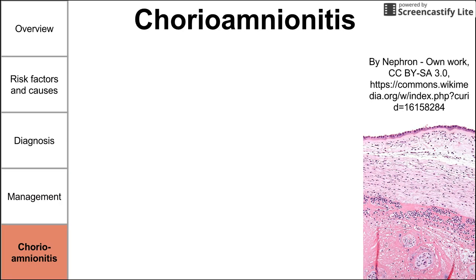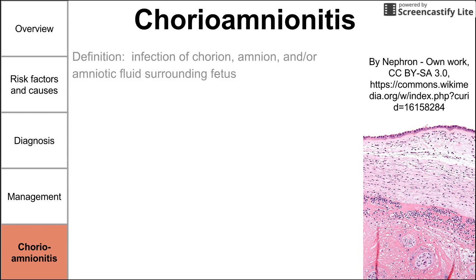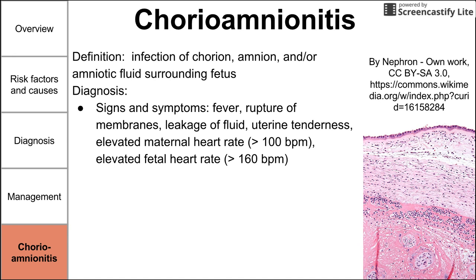One complication of premature rupture of membranes is chorioamnionitis — by definition, an infection of the chorion and amnion membranes as well as the amniotic fluid surrounding the fetus. If bacteria or fungi enter this area, infection can develop. Chorioamnionitis is diagnosed by signs and symptoms including fever, rupture of membranes, leakage of fluid, uterine tenderness, elevated maternal heart rate over 100 beats per minute, and elevated fetal heart rate over 160 beats per minute.